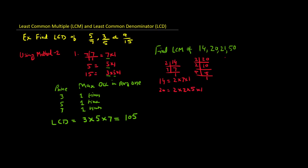Similarly, prime factors of 21: the minimum prime number is 3, then 7, then 1. So 21 = 3 × 7. And for the prime factors of 50: the minimum is 2, giving 25. Then 5 — because 25 is not divisible by 3 (2+5=7, not divisible by 3) — giving 5, then 1. So the prime factors of 50 are 2 × 5 × 5.